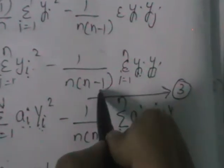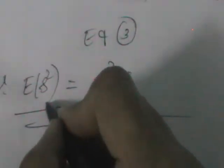Comparing with equation 3 which had small s² as 1 by n·sigma y_i² minus 1 by n(n minus 1)·sigma y_i·y_j in small letters — the expression we obtained for E(s²) is identical but with capital letters throughout: 1 by N·sigma Y_i² minus 1 by N(N minus 1)·sigma Y_i·Y_j, which is nothing but capital S². So we have proved that sample mean square s² is an unbiased estimator of population mean square S².